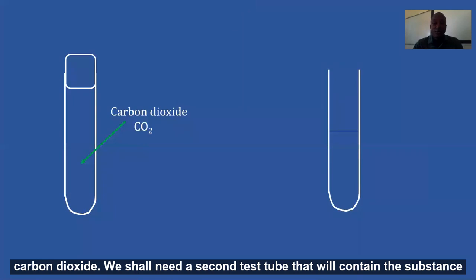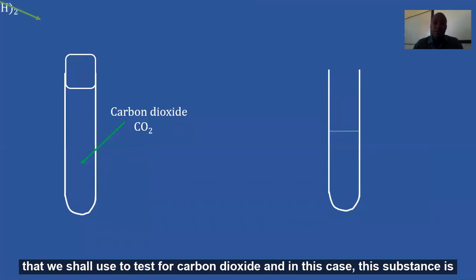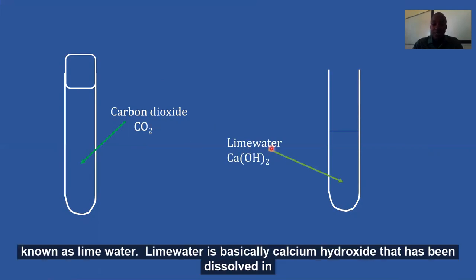We shall need a second test tube that will contain the substance that we shall use to test for carbon dioxide, and in this case, this substance is known as lime water. Lime water is basically calcium hydroxide that has been dissolved in water.